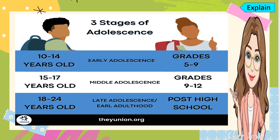There are three stages of adolescence: early adolescence from 10 to 14 years old, middle adolescence from 15 to 17 years old, and late adolescence or early adulthood from 18 to 24 years old.